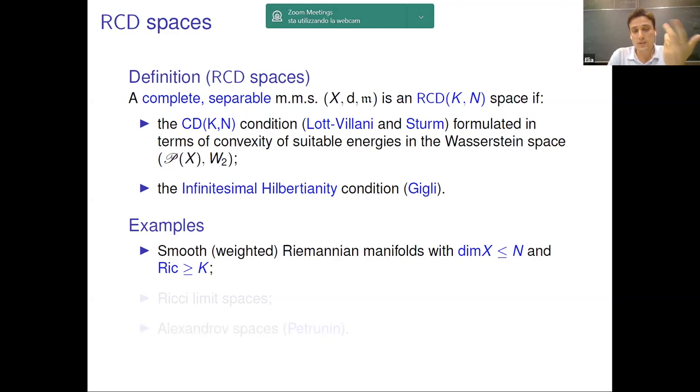And this class is quite rich. Of course, the notion is coherent with the smooth notion, and therefore smooth manifolds with the correct curvature dimension bounds belong to this class. The class of Ricci limits belongs to this class of RCD spaces. This is related to the fact that the RCD condition is stable with respect to the Gromov-Hausdorff convergence. And finally, the class of Alexandrov spaces with the sectional curvature bounded from below turns out to be also a subclass of the RCD spaces. And this is a result of Petrunin.